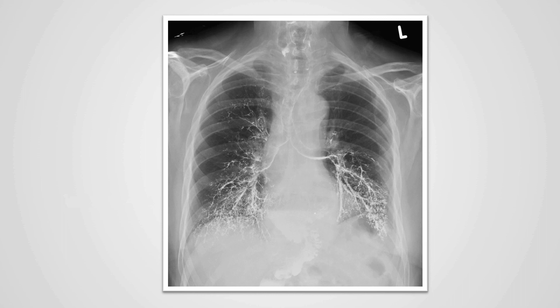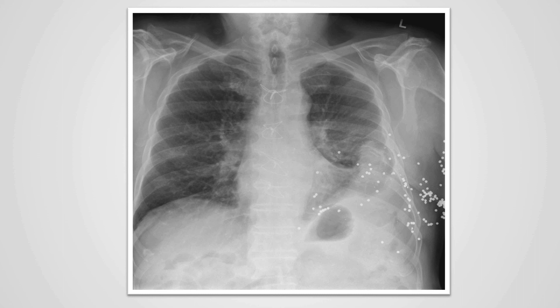In addition though, we can also identify very white density within the trachea and the airways within the lungs. And this happens to be barium that the patient aspirated during an upper gastrointestinal examination.